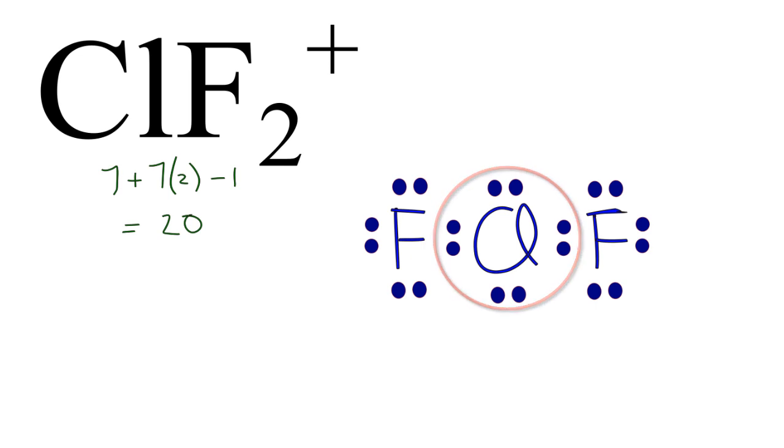At this point the Lewis structure is done. This is the Lewis structure for ClF2+, but we need to do one last thing: put brackets around it and a positive charge to show that it's an ion. And that's the Lewis structure for ClF2+.